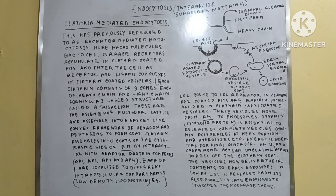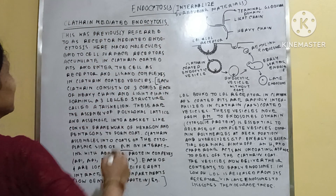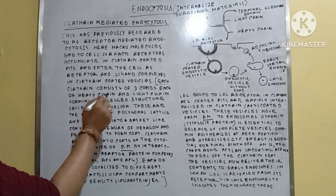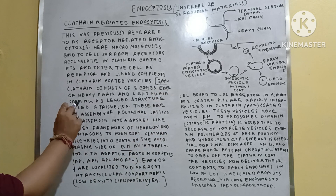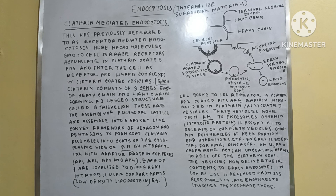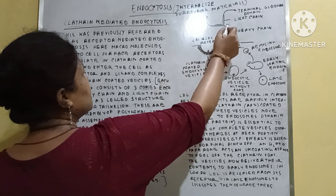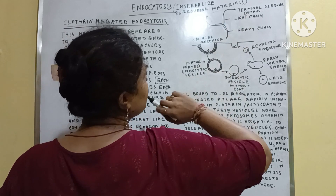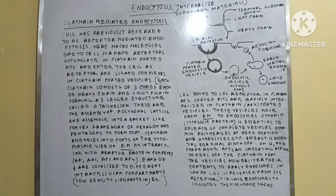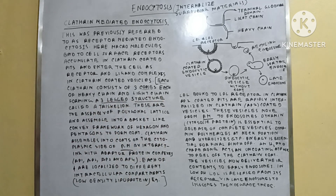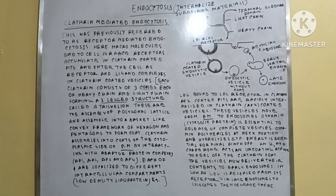Here we will learn about clathrin-mediated endocytosis. First of all, we have to know what clathrin is. Clathrin generally consists of three copies of heavy chain and light chain. You can see the brief structure here — these are the light chains, these are the heavy chains, and the dot-like structures are called the terminal globular domain. These three copies of heavy chain and light chain form a three-legged structure called the triskelion.